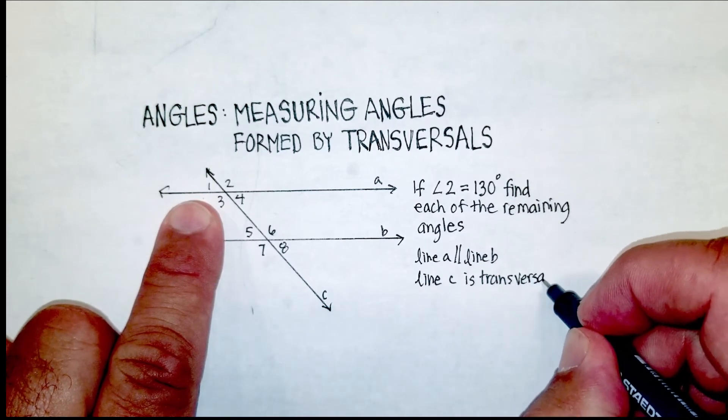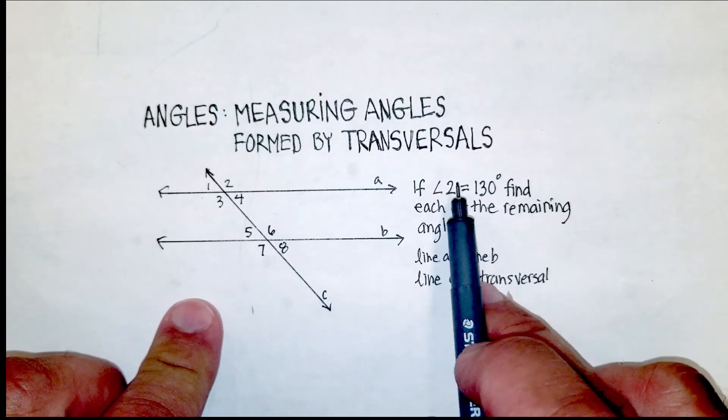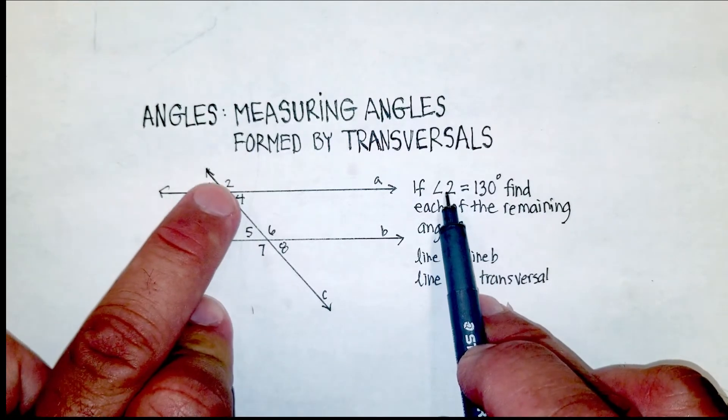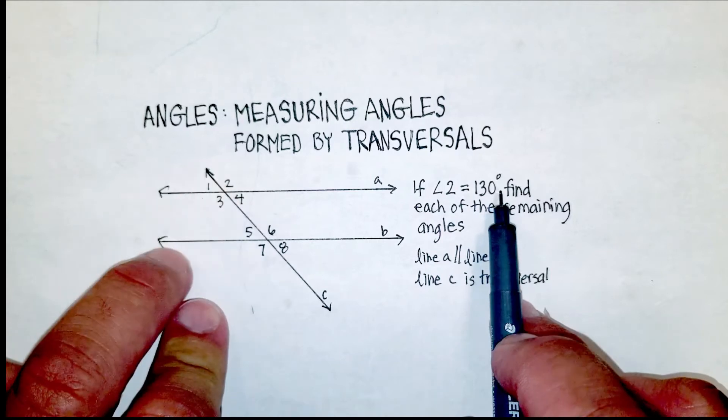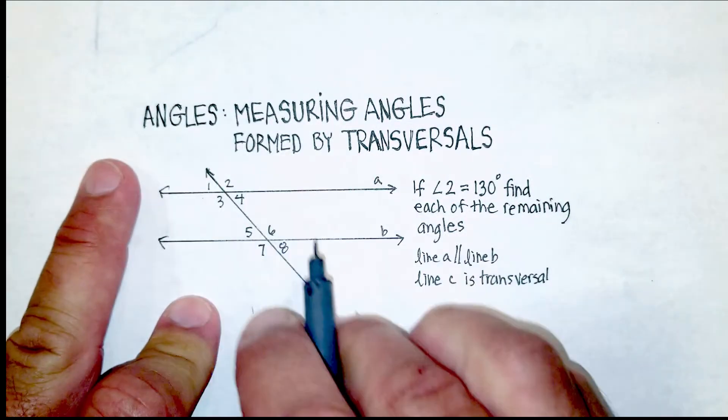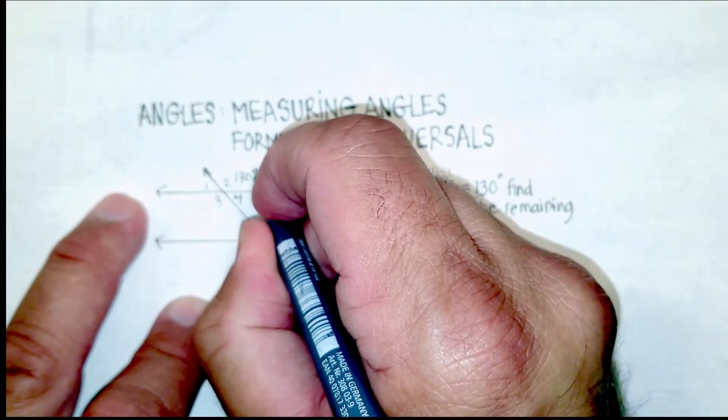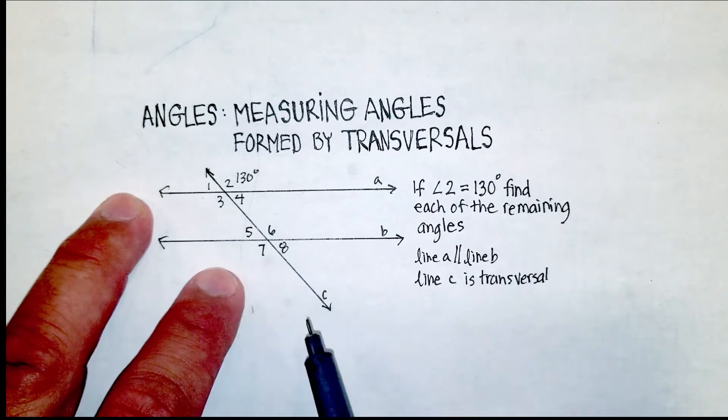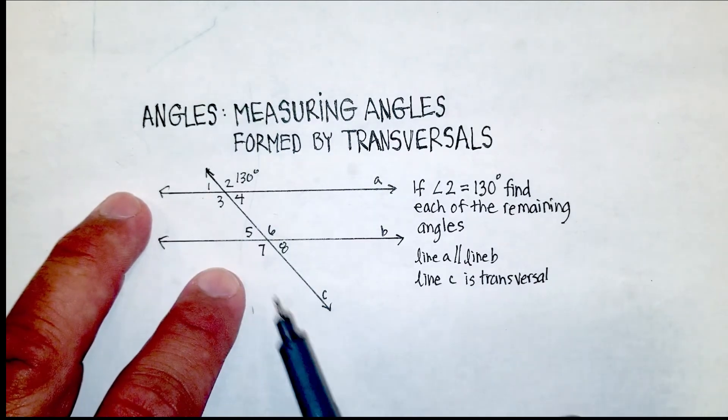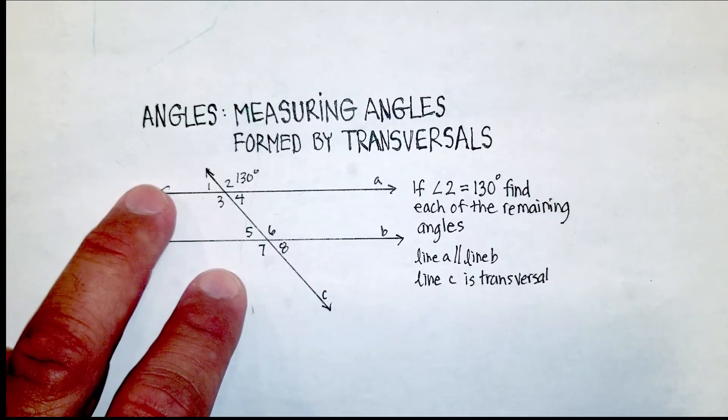All right. Now, we know from our problem that angle two is 130 degrees. So let's apply what we do know about angles that are formed by transversals and see if we can come up with all the other angles in this problem.